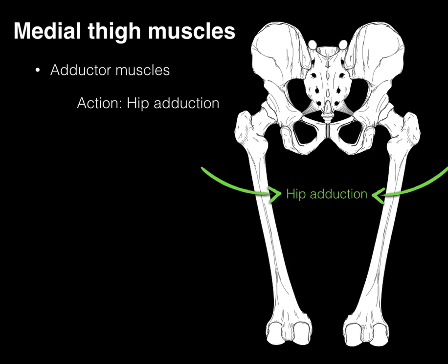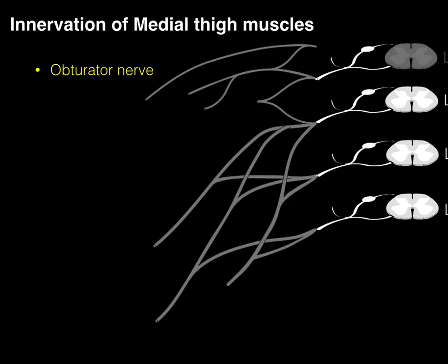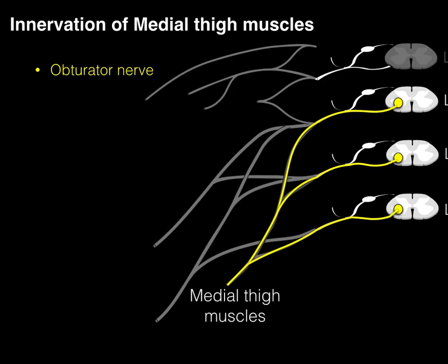These medial thigh muscles also all have a common innervation: they are innervated by the obturator nerve. Focusing on the lumbar plexus at the L2, L3, and L4 levels of the spinal cord, those motor neurons in the ventral horn send their axons out to form the obturator nerve, which innervates the medial thigh muscles. The L3 myotome causes adduction of the hip, which is why the obturator nerve is heavy at the L3 level.